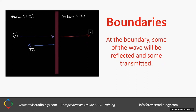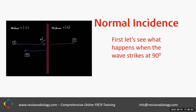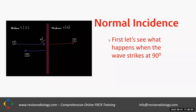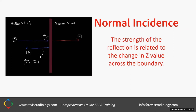We'll first look at normal incidence — what happens when the wave strikes at 90 degrees, perpendicular to the boundary. The strength of the reflection is related to the change in Z value across the boundary — that is, the difference in the two Z values. So imagine if the Z value of medium one is 600 rayls and the Z value of medium two is 700 rayls: what would be the change in Z value across the boundary?